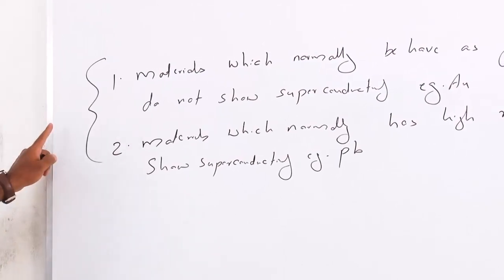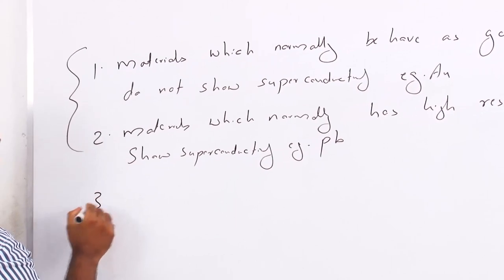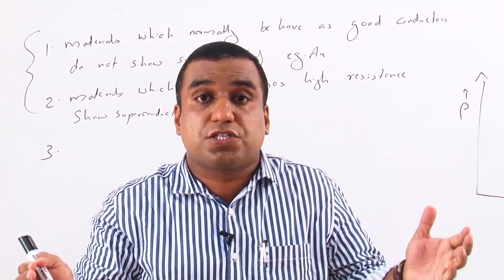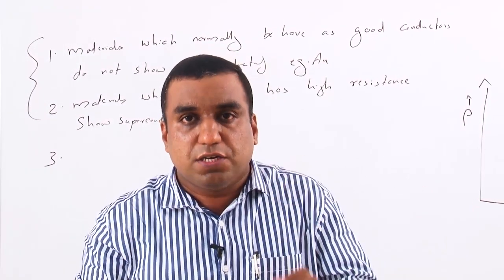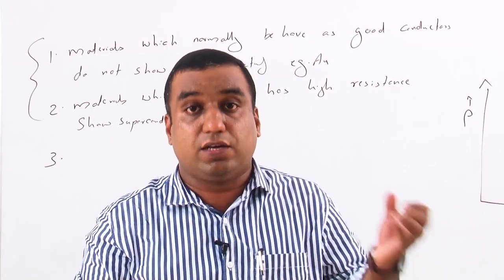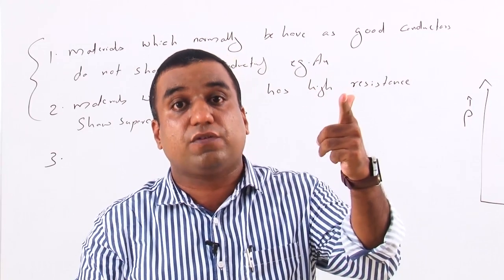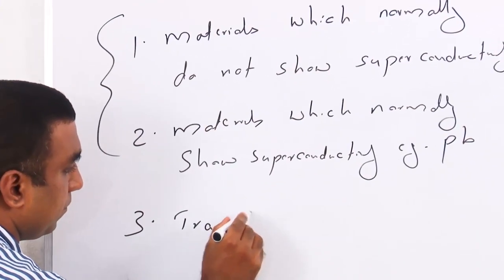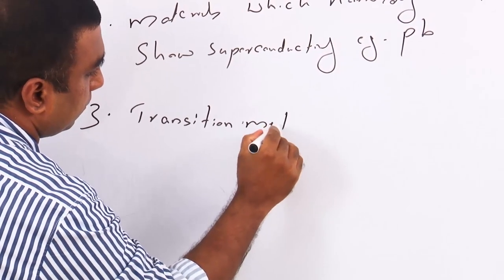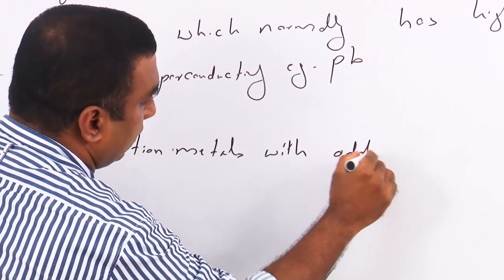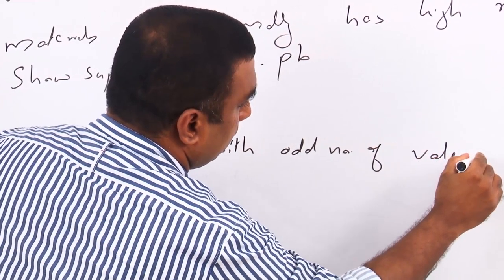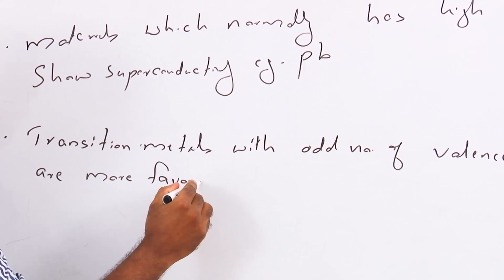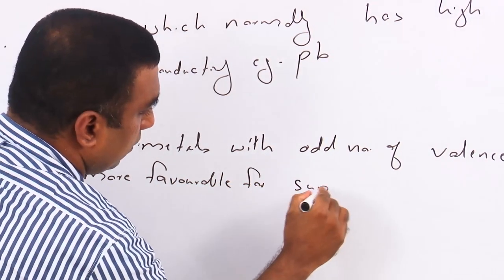These two properties — good conductors not superconducting, and bad conductors superconducting — show an anti-correlation. Third, transition metals having an odd number of valence electrons show variable valence, and transition metals with an odd number of valence electrons — like 1, 3, 5, or 7 — are more favorable for superconductivity.